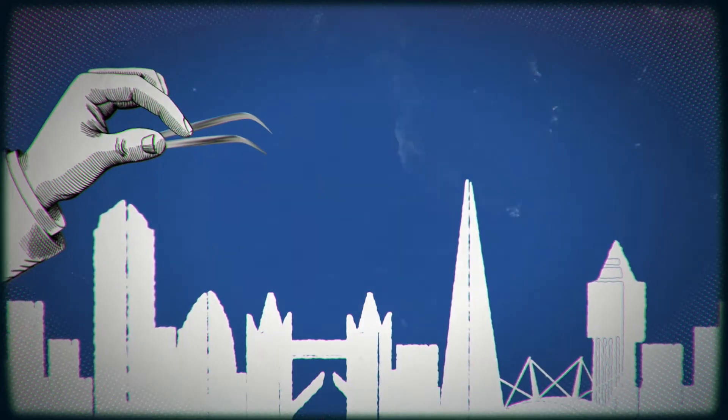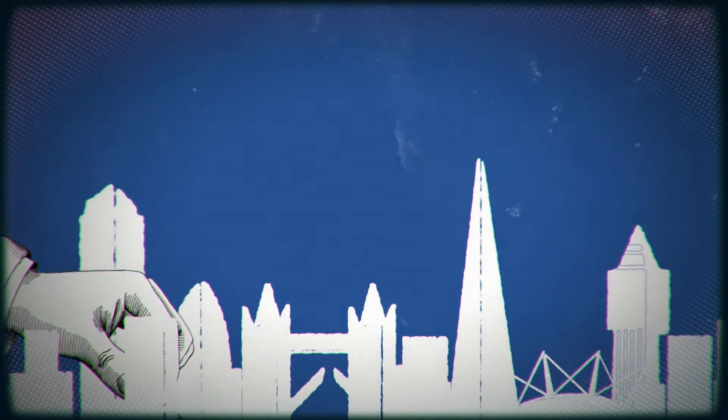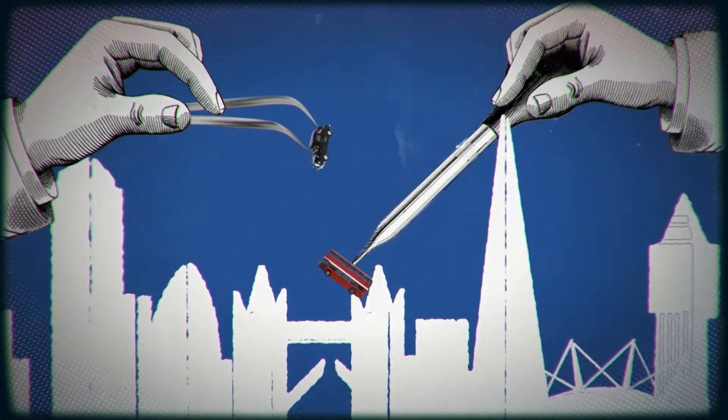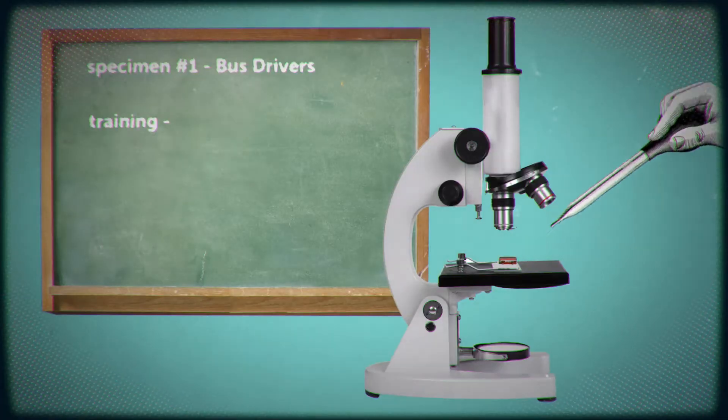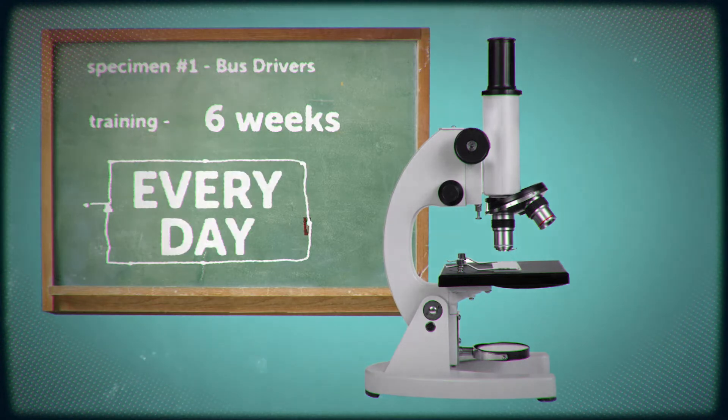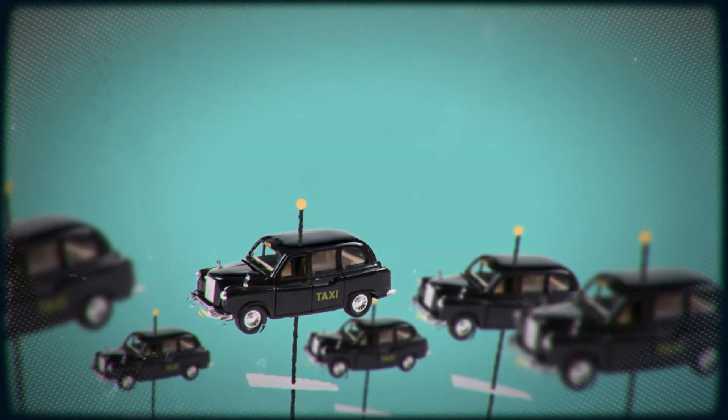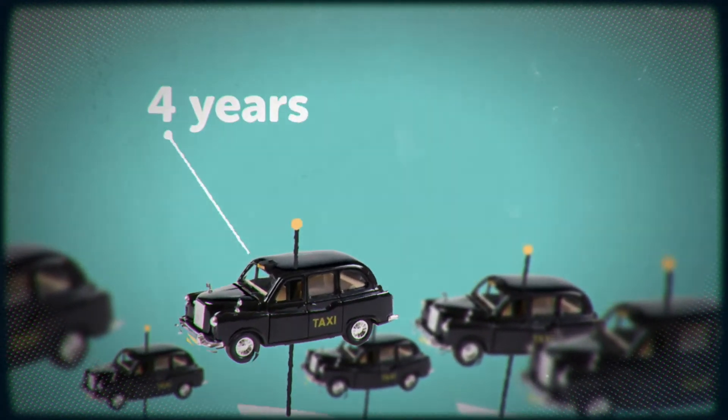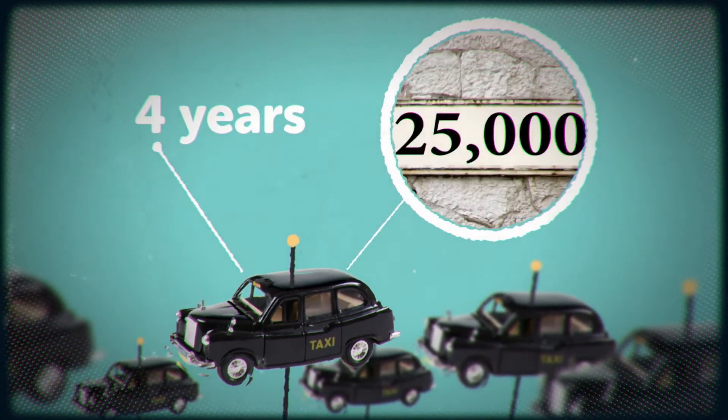In 2000, researchers began to investigate a group of London taxi and bus drivers. The bus drivers trained for six weeks, and then drove the same routes every day. Whereas the taxi drivers had trained for up to four years, memorising some 25,000 streets.